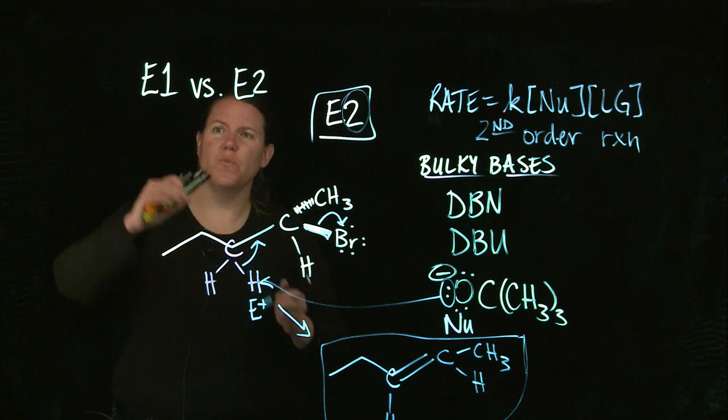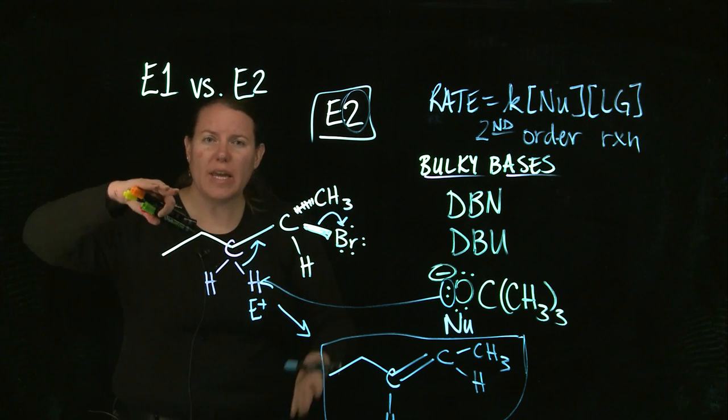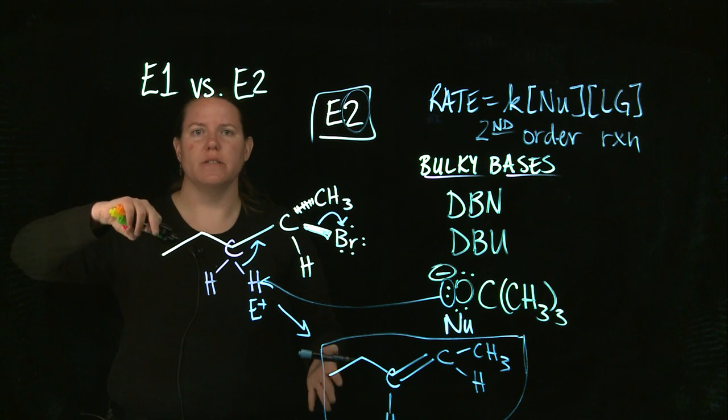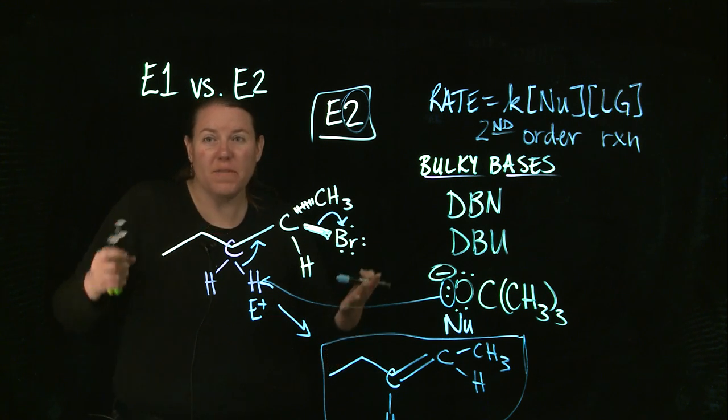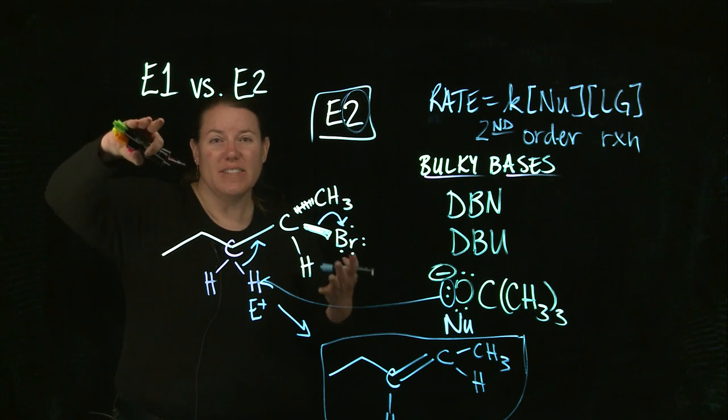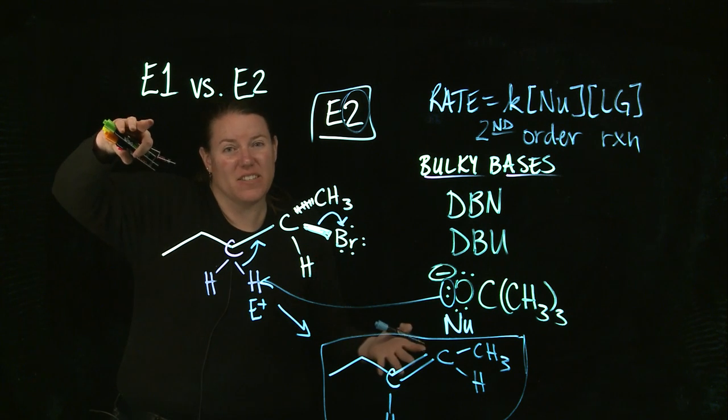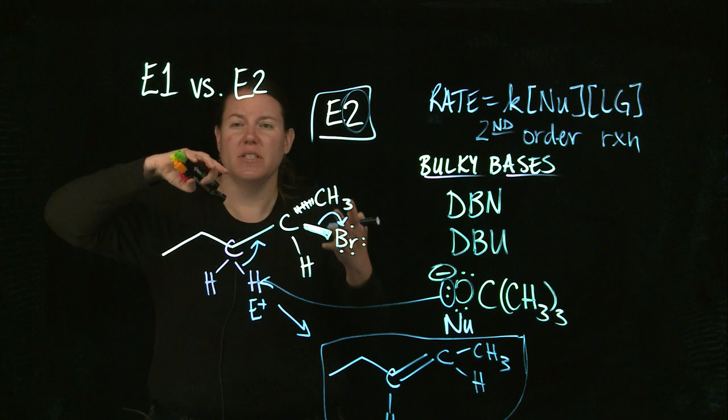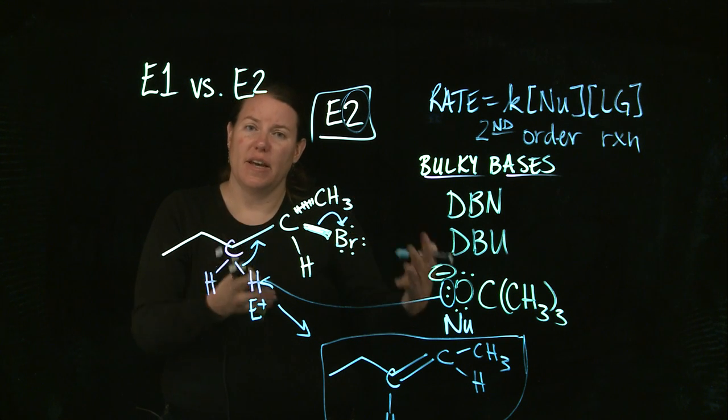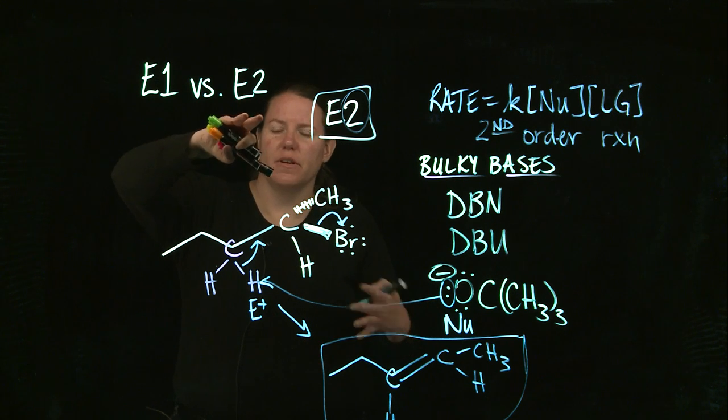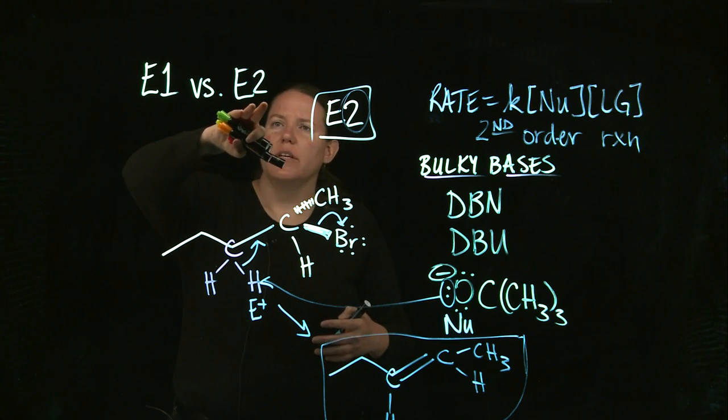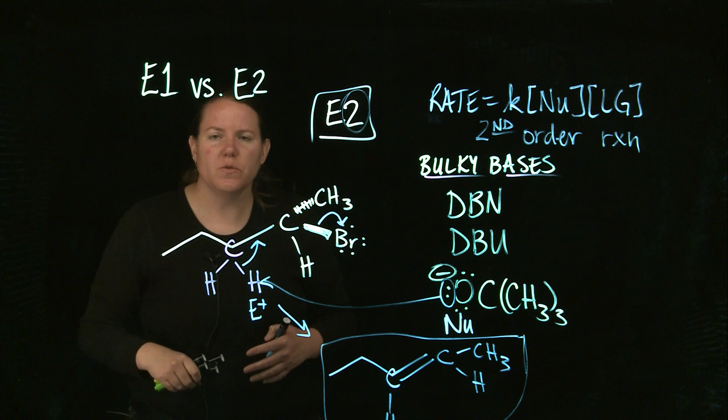Well, so if I want to do ones, I use weak nucleophiles or bases. And then maybe I do a polar protic solvent. Often, your nucleophile or base is the exact same thing as the solvent. And it's there to stabilize that carbocation. In terms of... and to get the leaving group to leave.